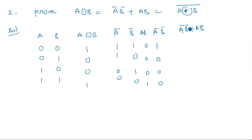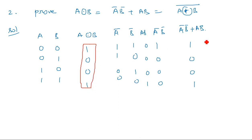We should also calculate AB: output is one only when both are one, so AB gives 0,0,0,1. Now ĀB̄ + AB: adding these two gives 1,0,0,1. Comparing with the XNOR output (1,0,0,1) — they match. This is verified. When reducing Boolean expressions, these expansions are very important. If we have A XNOR B in any Boolean equation, we should expand it in this format before simplifying further.